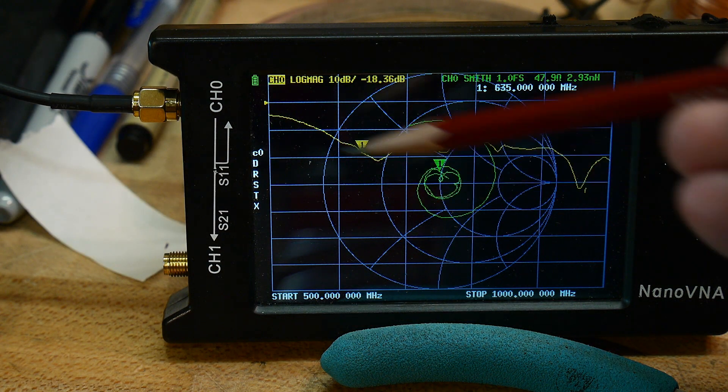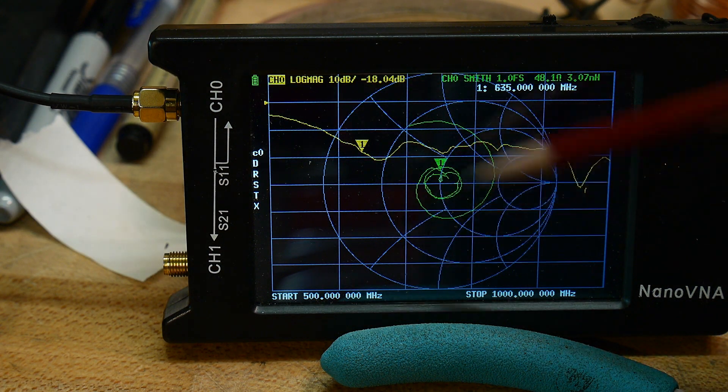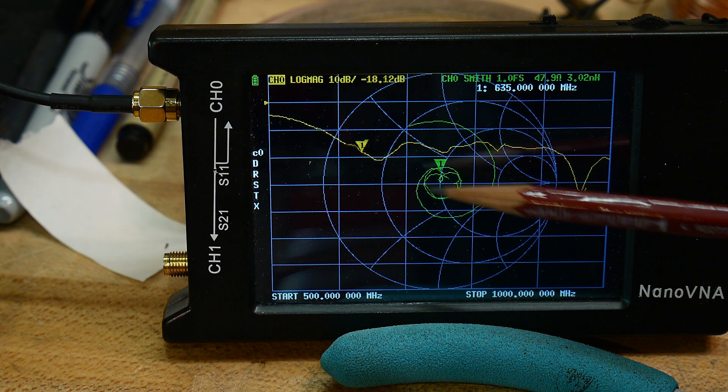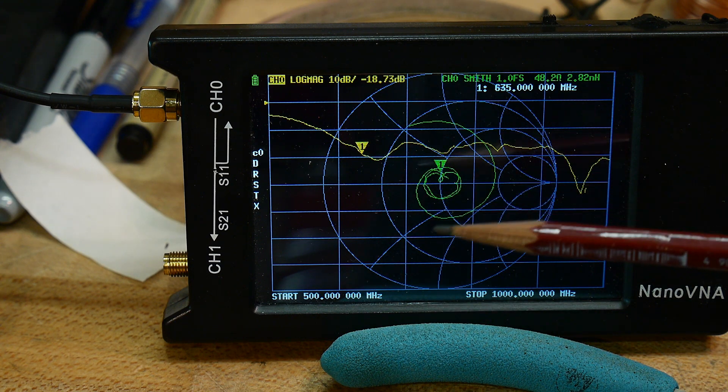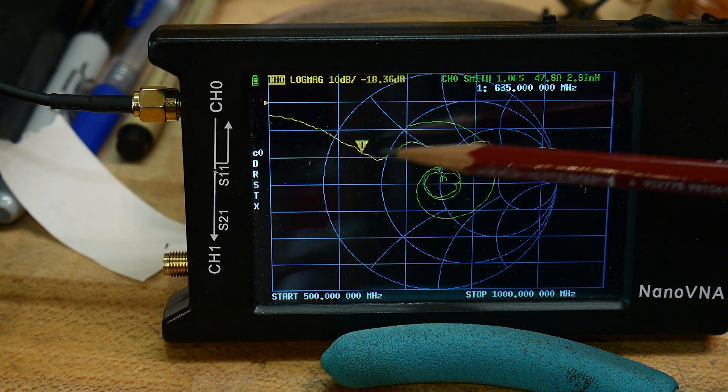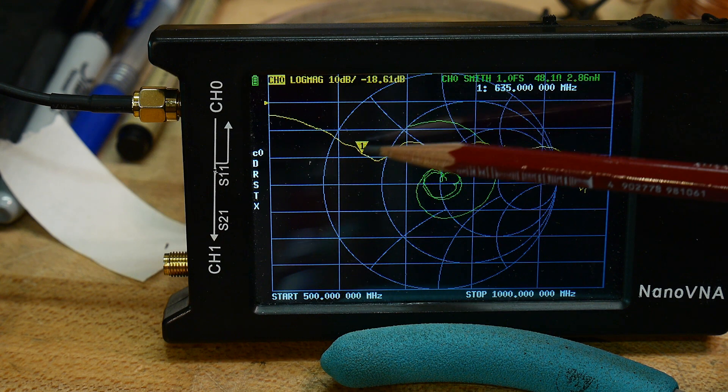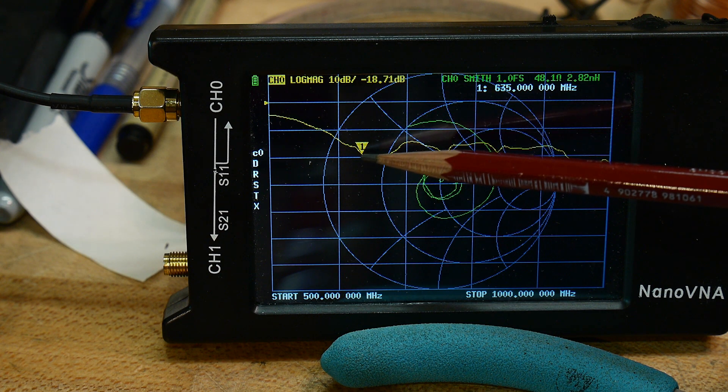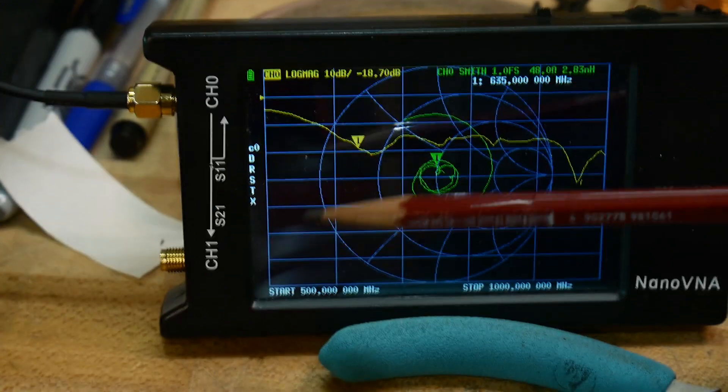So there we go. This is return loss in yellow and Smith chart in green. You can see that it's zip around the 50 ohm mark there. And the marker here is at minus 20 dB return loss, which is an SWR of like 1.2.